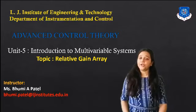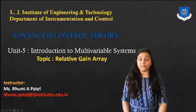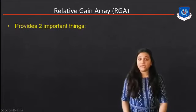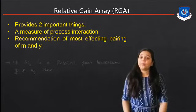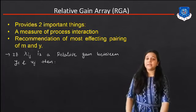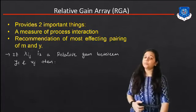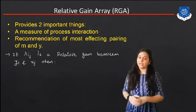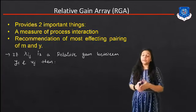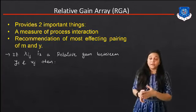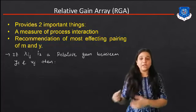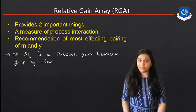In the last session, we studied about what is the Relative Gain Array. It provides two important things: a measure of process interaction, and recommendation of the most effective pairing of manipulated and output variables. Using the Relative Gain Array, we can find out the most effective pair for this multi-loop control system.